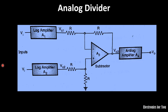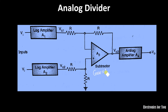This is the block diagram for the analog divider. We are using two log amplifiers, and they are further connected to a subtractor circuit with gain equal to 1. That gain is actually only 1. And further it is connected to an antilogarithmic amplifier.